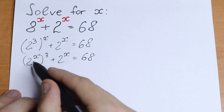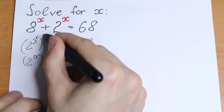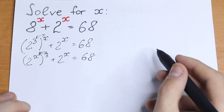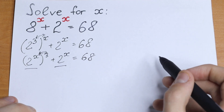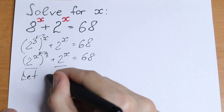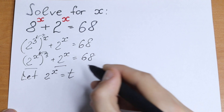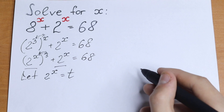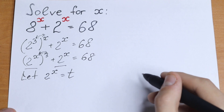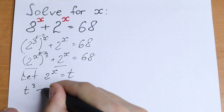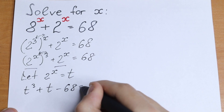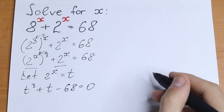So let's remember and learn about this rule — we can swap this power, this exponent. We have 2 to the power x and 2 to the power x right here. As a result we can work with a substitution: let 2 to the power x equal to t. We will have t cubed right here, and t right here. So as a result we will have a cubic equation: t cubed plus t minus 68 equal to 0.